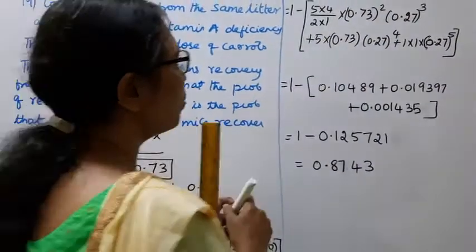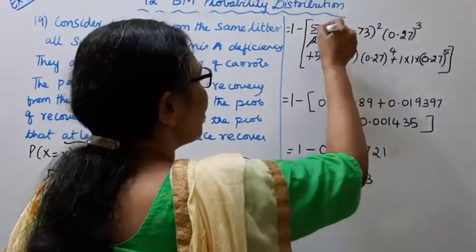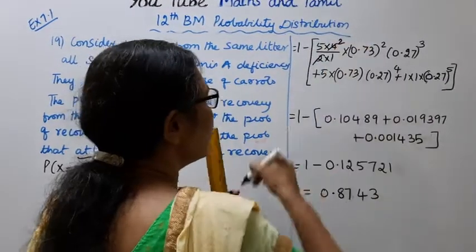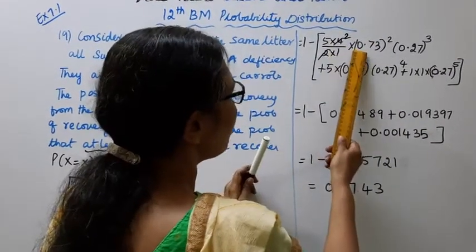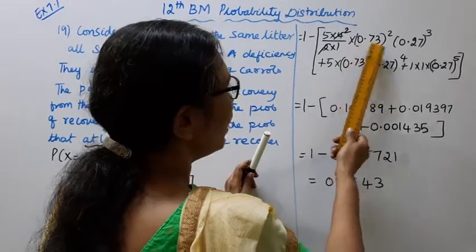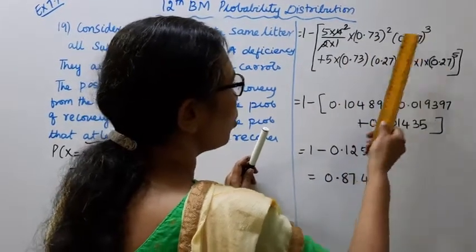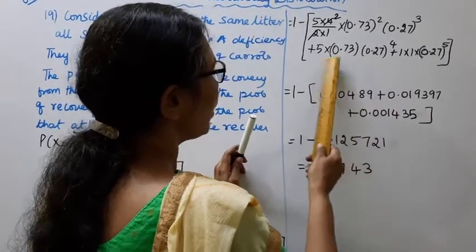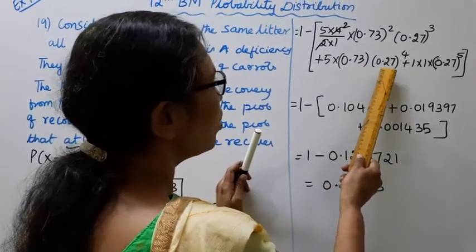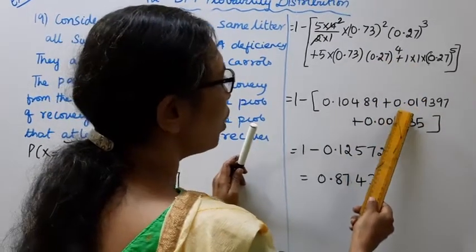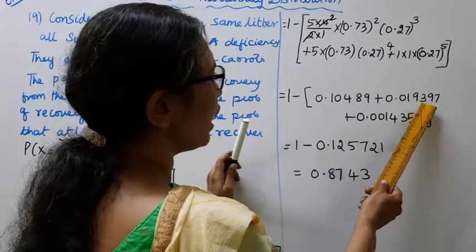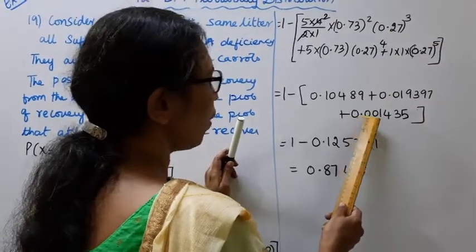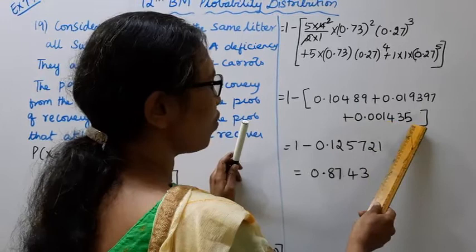1 - [10 × (0.73)^2 × (0.27)^3 + 5 × (0.73) × (0.27)^4 + (0.27)^5]. Calculating: 0.10489 + 0.019397 + 0.001435.